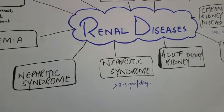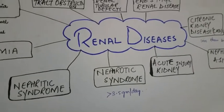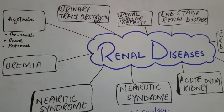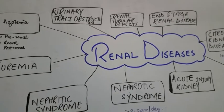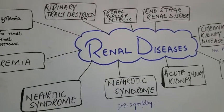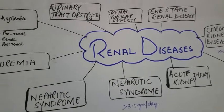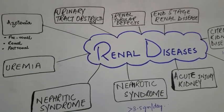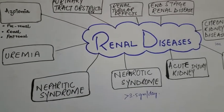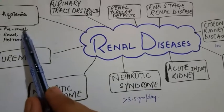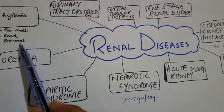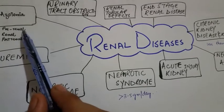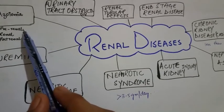In this video, I am going to discuss the clinical manifestations of renal diseases. First, I will discuss azotemia. In azotemia, there is a decrease in the GFR along with an increase in blood urea nitrogen and creatinine levels. The causes of azotemia are pre-renal causes, renal causes, and post-renal causes.